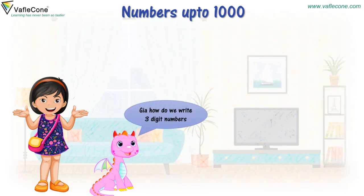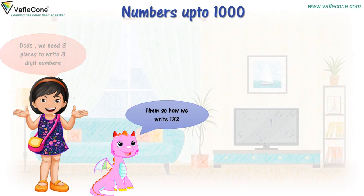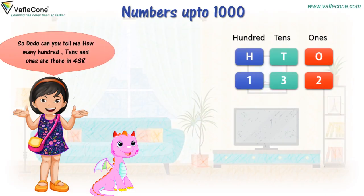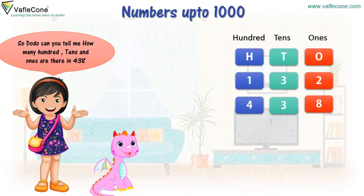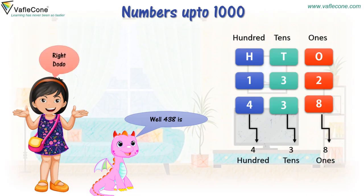Jiya, how do we write three-digit numbers? We need three digits for three-digit numbers. So, how do we write 132? See there. Can you tell me how many hundreds, tens, and ones are there in 438? Well, 438 is 4 hundreds, 3 tens, and 8 ones. Right?